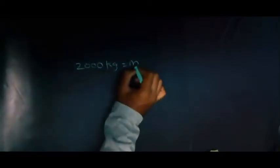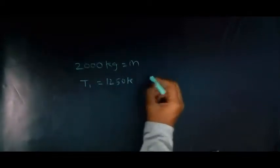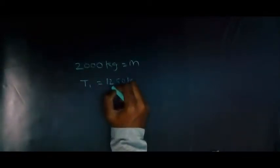The problem is a steel billet of 2000 kg. The mass of the steel billet is given as 2000 kg and is to be cooled from an initial temperature. This is the temperature of this 2000 kg billet.